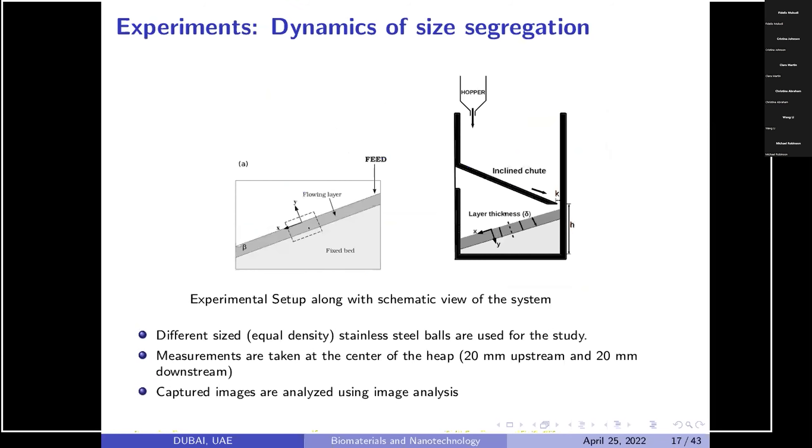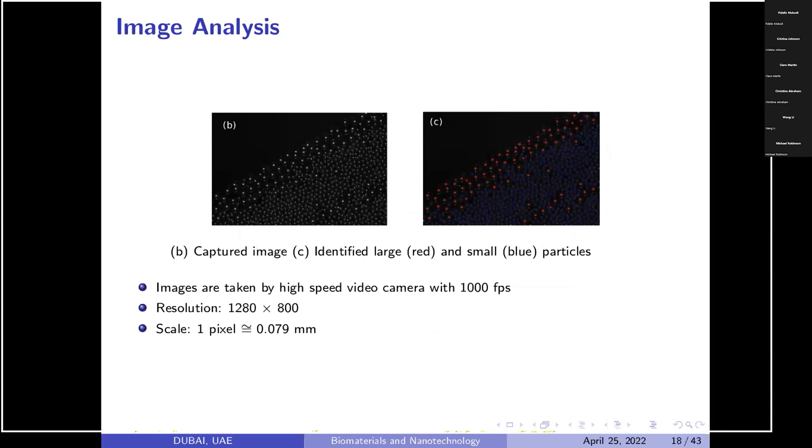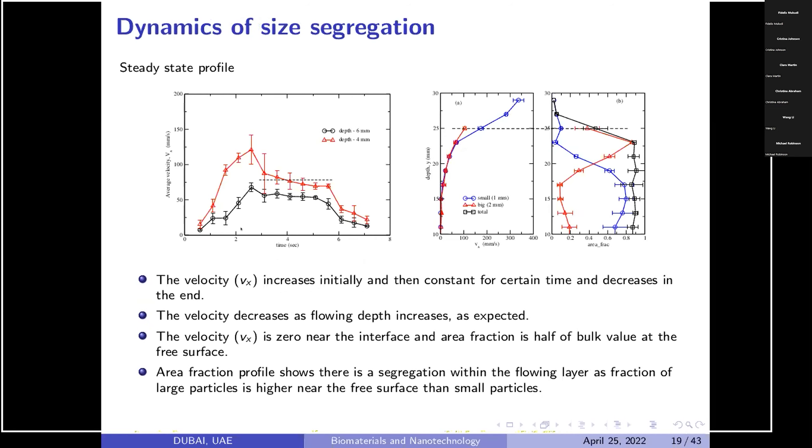This was a static experiment, then we performed dynamic experiment, same setup, no change. The only thing is the images are captured at the middle of the experimental setup. You can see dotted region and thousand frames per second images are captured and each image is again detected by using image analysis code and plotted with respect to time. You can see this is the detection of small and large particles. In dynamics we have plotted average velocity versus time. You can see how it changes.